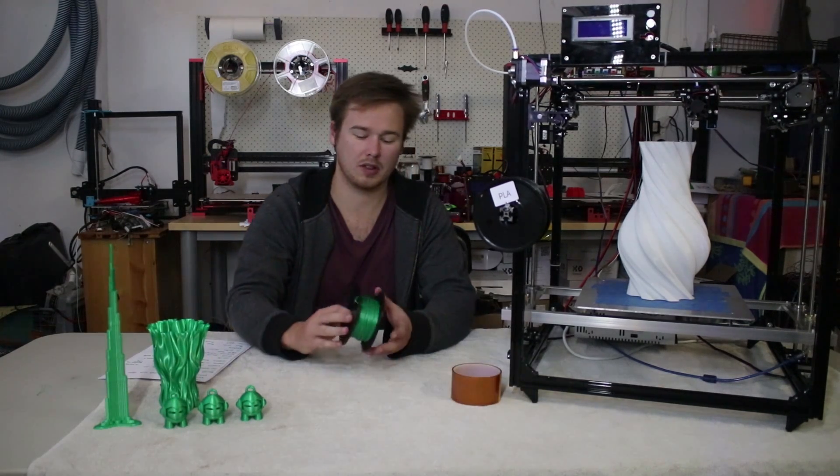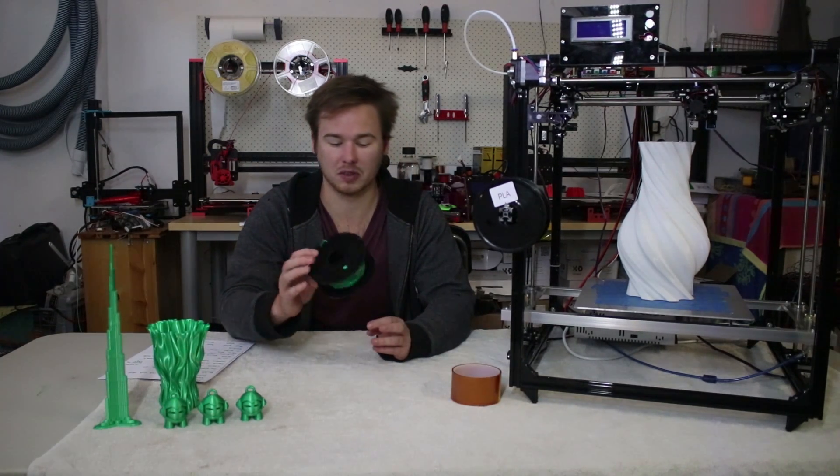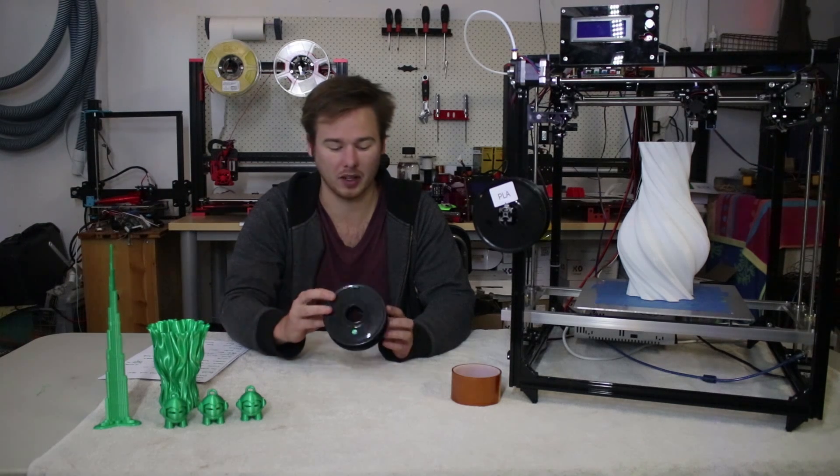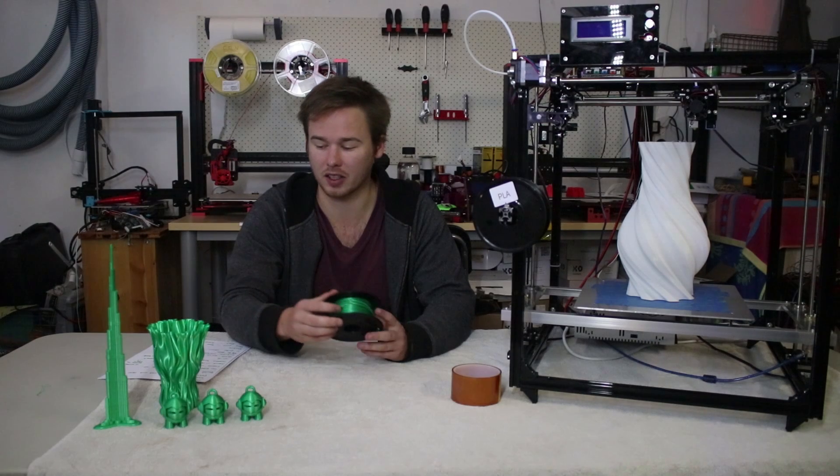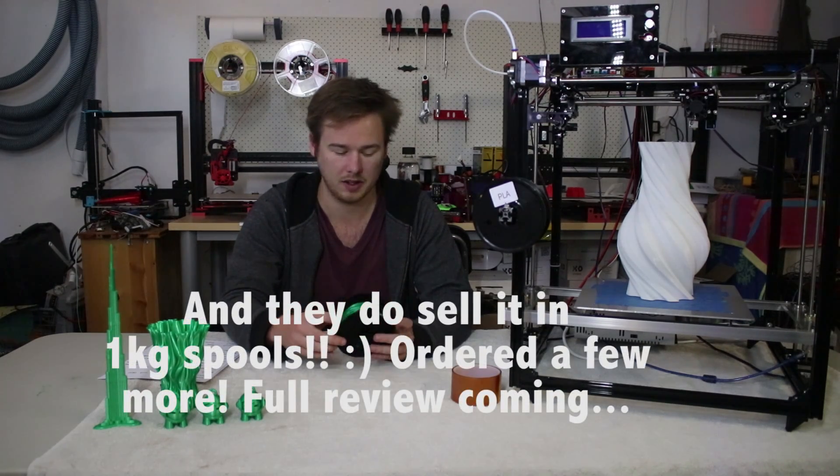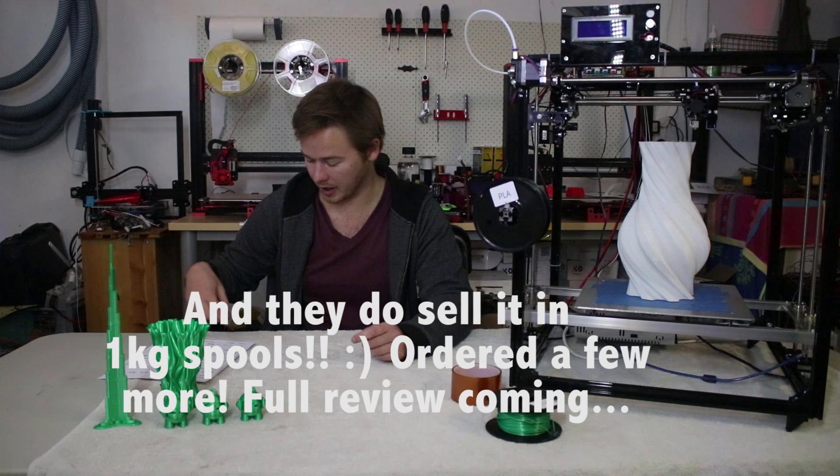So this kit comes with two spools of PLA, small spools like this. This was actually my favorite part of the kit. I really like this green PLA. It's got like a nice pearlescent sheen to it.